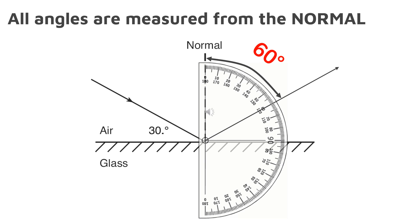We put the zero line of the protractor on the normal, mark off 60 degrees, and draw the reflected ray.